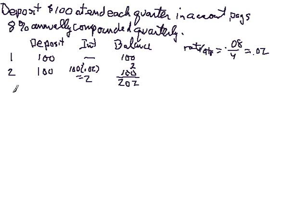Now let's go on and take a look at the third quarter. We, again, put in $100 at the end of the quarter. Now, how do we calculate our interest? We know we're going to have to add $100 to this.